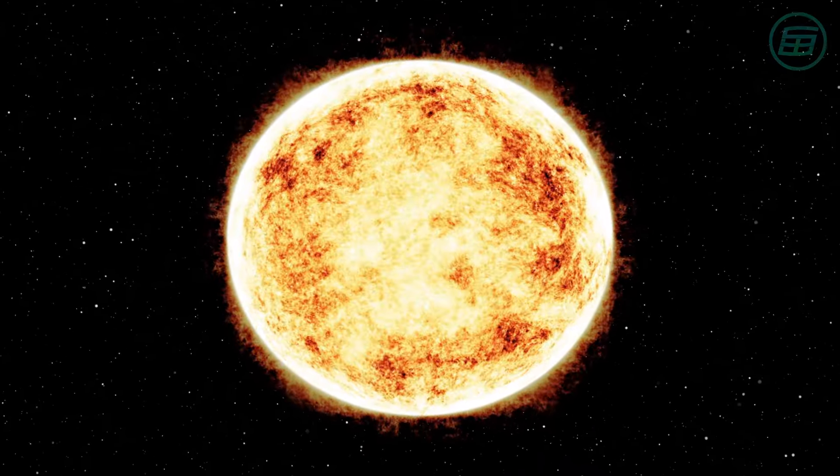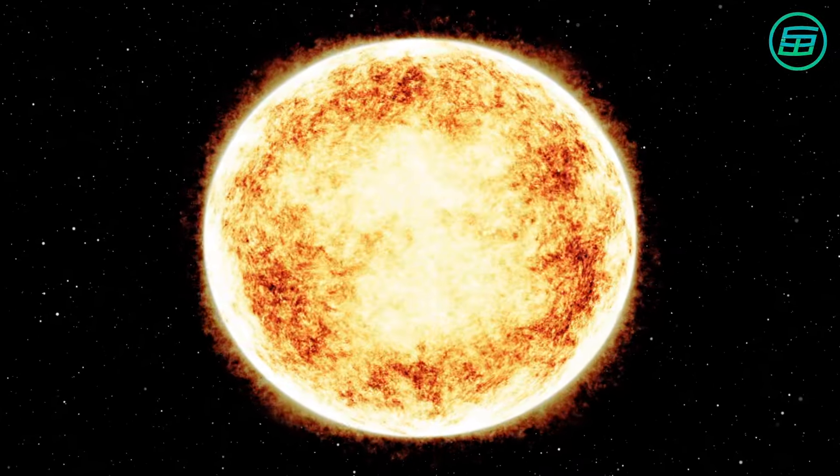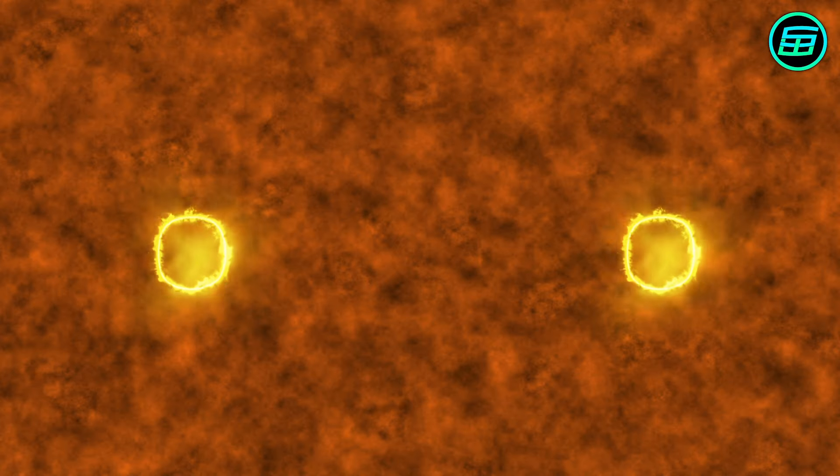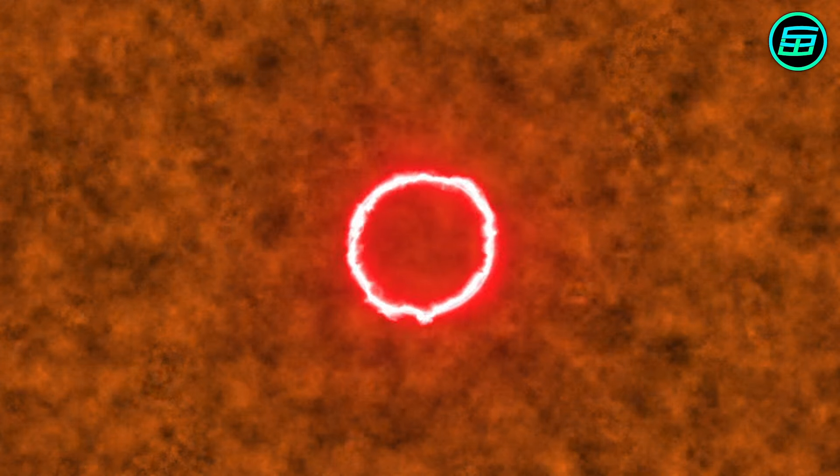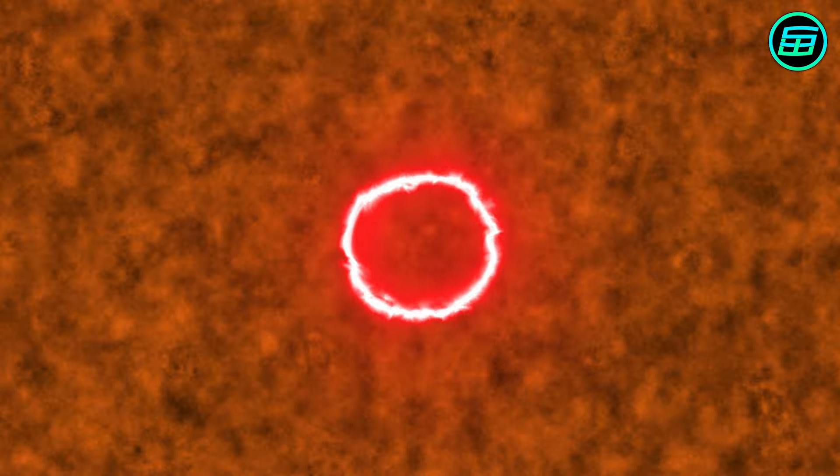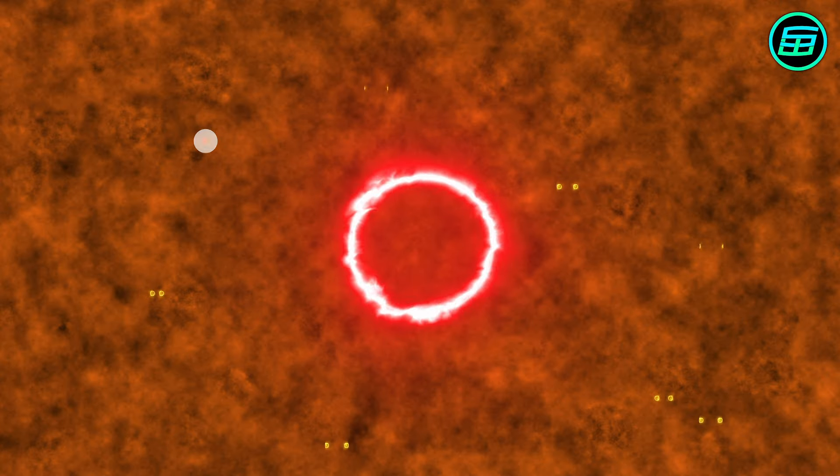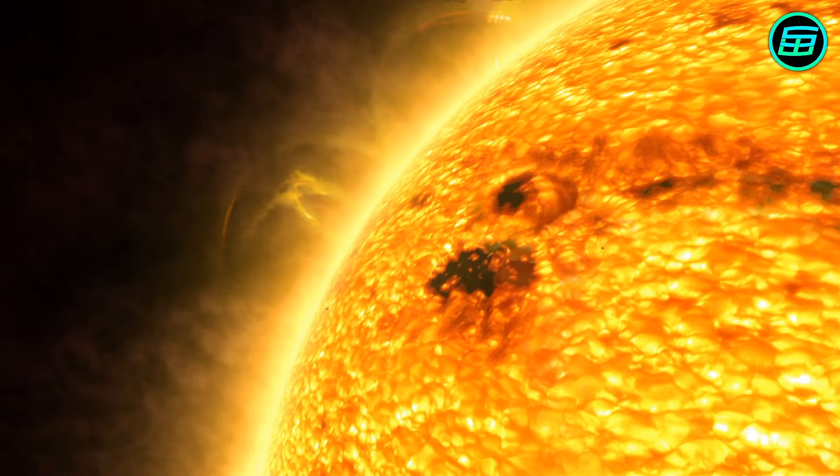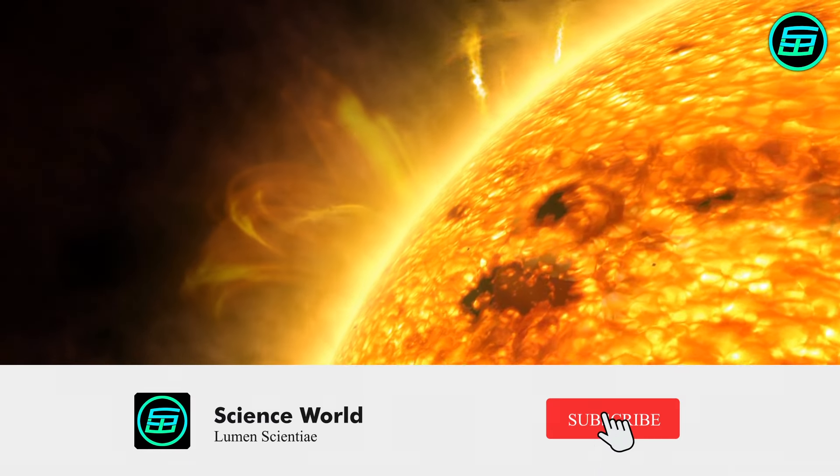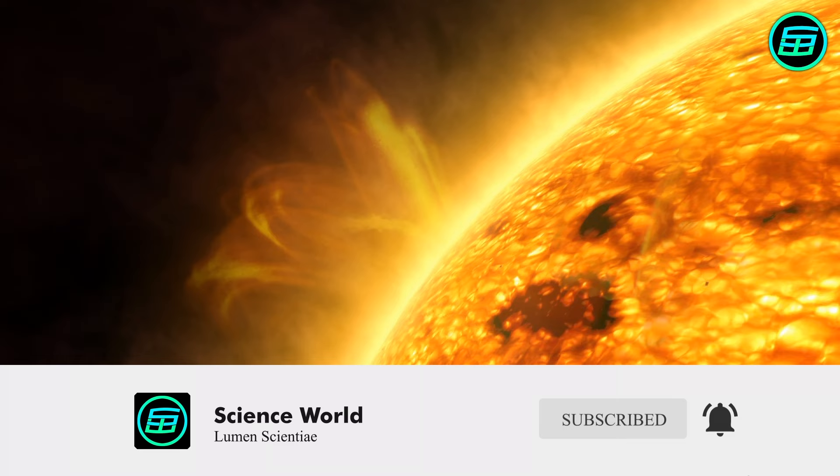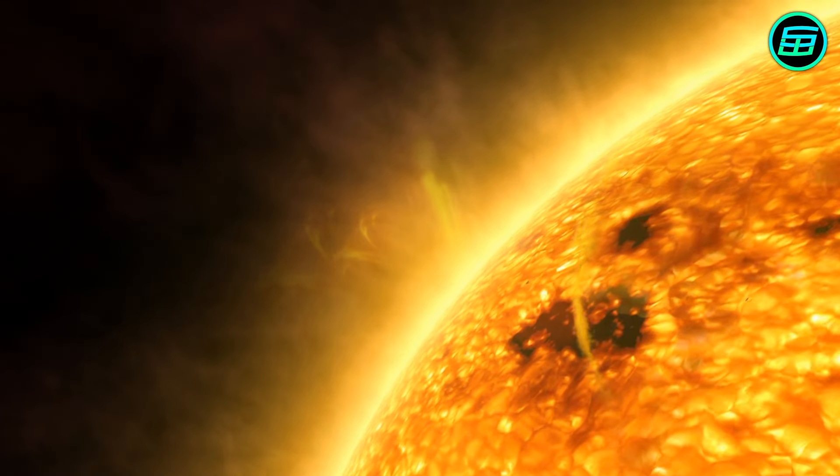Stars are made mostly of hydrogen and helium. Inside their cores, the temperature and pressure are high enough for fusion reactions to take place that turn hydrogen nuclei into helium. During this transformation, a huge amount of energy is released which travels outward and eventually escapes into space as light and other forms of electromagnetic radiation.